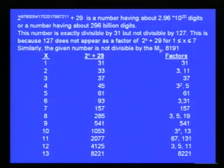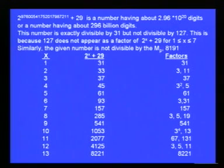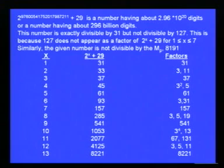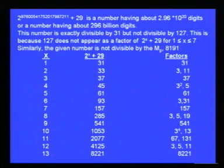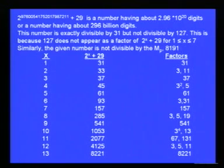I can say that this number is exactly divisible by 31 for a simple reason: when x equals 1, 2^x + 29 equals 31. And the exponent I have given, x minus 1, is divisible by 5. You will find that not only is the number I have given divisible by 31, but any exponent ending in 1 or 6 will also be divisible by 31.